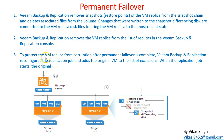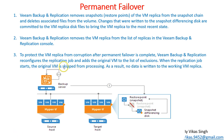To protect the virtual machine replica from corruption after permanent failover is complete, Veeam Backup and Replication reconfigures the replica job and adds the original virtual machine to the exclusion list. Once this virtual machine is permanently moved to the new host, it is placed in the exclusion list. When the replication job starts, the original VM is skipped from processing. As a result, no data is written to the working VM replica, so it will no longer have a replicated copy of the original virtual machine.